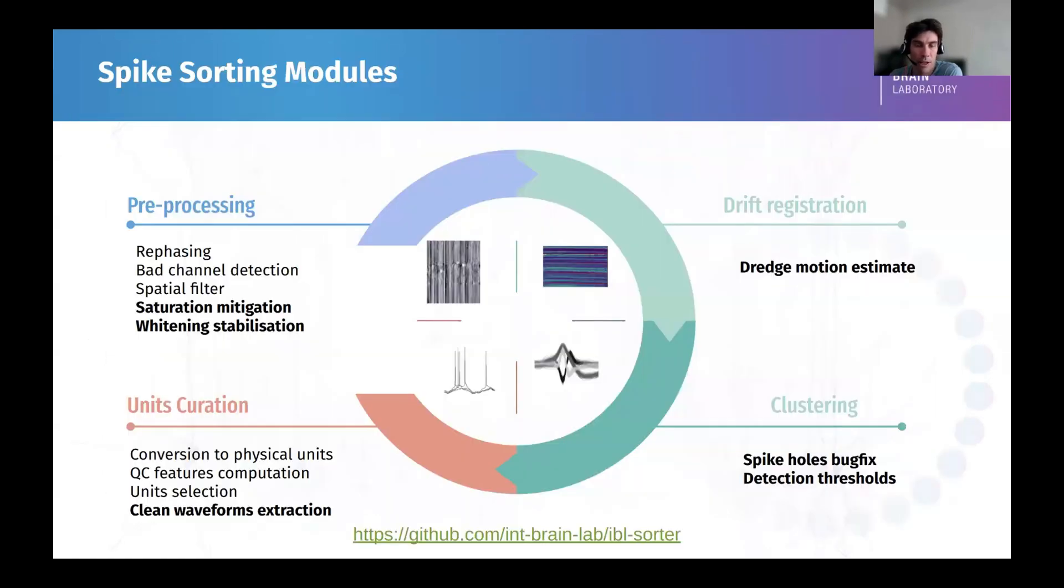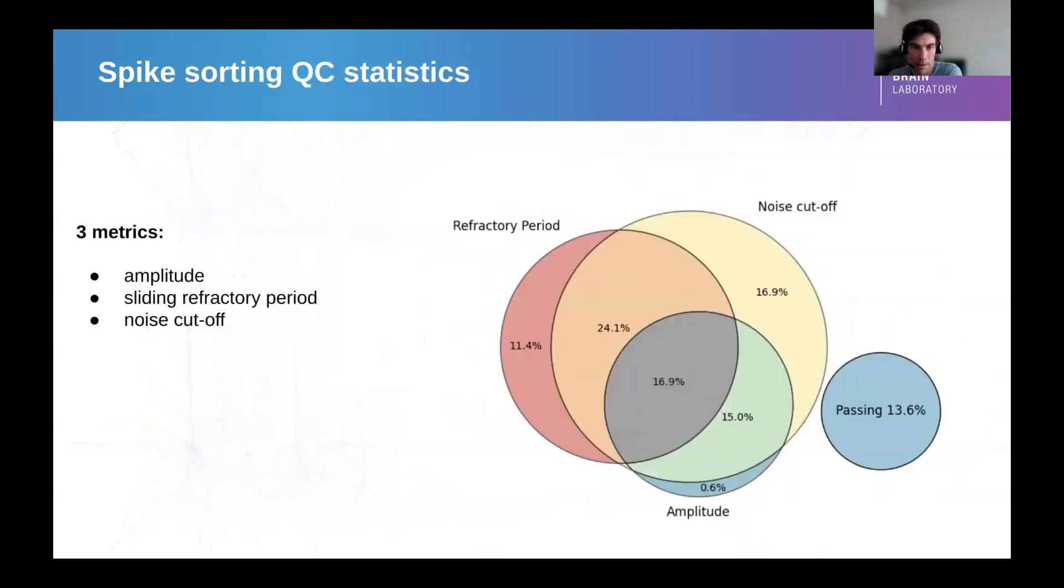The next thing I'm going to talk very quickly, the way we qualify the units. We do an automatic curation at the scale of which we work. It's a bit easier than doing the manual curation in Phy. So for this, we have three metrics. We compute the amplitude of the units, the refractory period, and something that is based on the distribution of amplitudes to make sure that the amplitudes are not cut. Chris is going to cover this at length tomorrow. Just the bottom line of this diagram is that we have more or less 13-14% of the units that are passing.